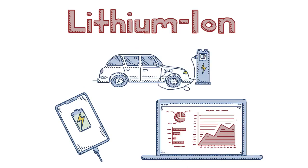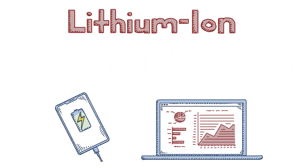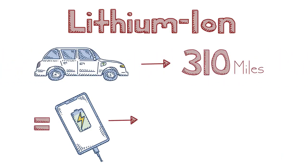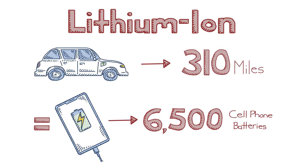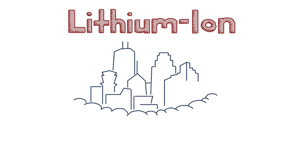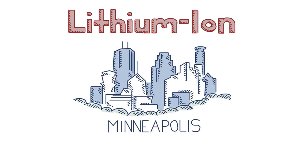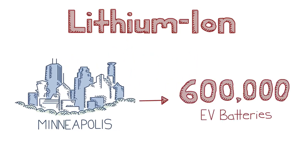For perspective, battery packs with enough energy to drive an electric vehicle for 310 miles are equivalent to the energy stored in 6,500 cell phone batteries. And batteries with sufficient energy storage to power an entire city like Minneapolis during a four-day storm would require the energy of 600,000 EV batteries.